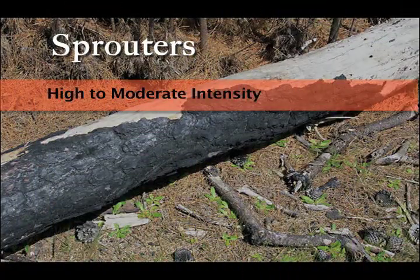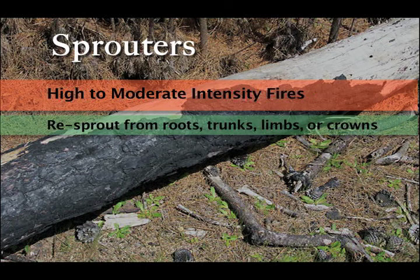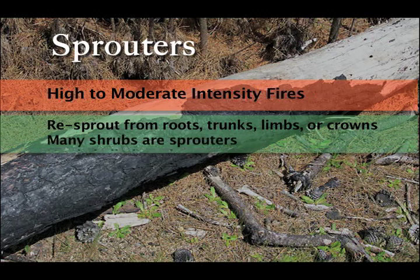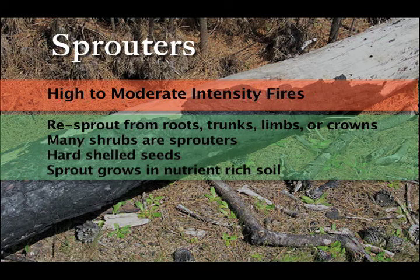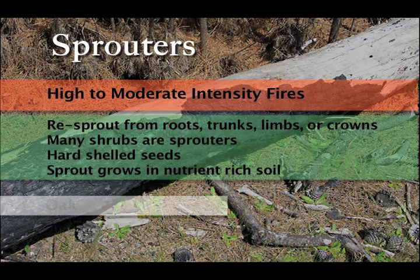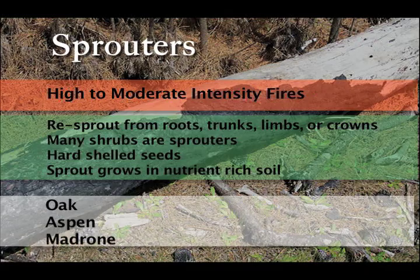Sprouters are species that endure a fire by re-sprouting from their roots, trunks, limbs, and/or crown after a burn. Many shrubs are sprouters, and some also have hard-shelled seeds relying on fire to crack them open. While the parent plant may be injured in a fire, the new sprouts are able to grow in nutrient-rich soil with less competition. Some examples include oak, aspen, and madrone.